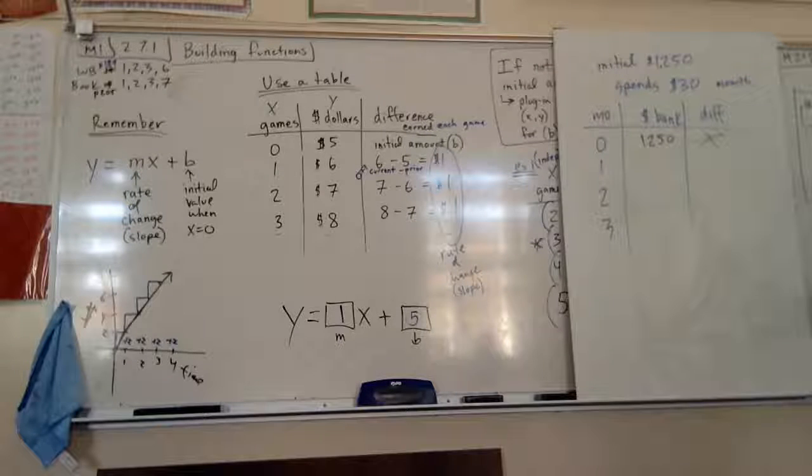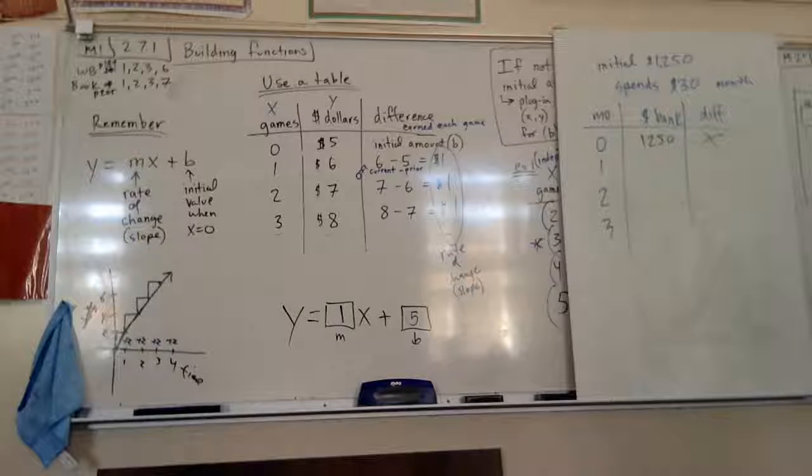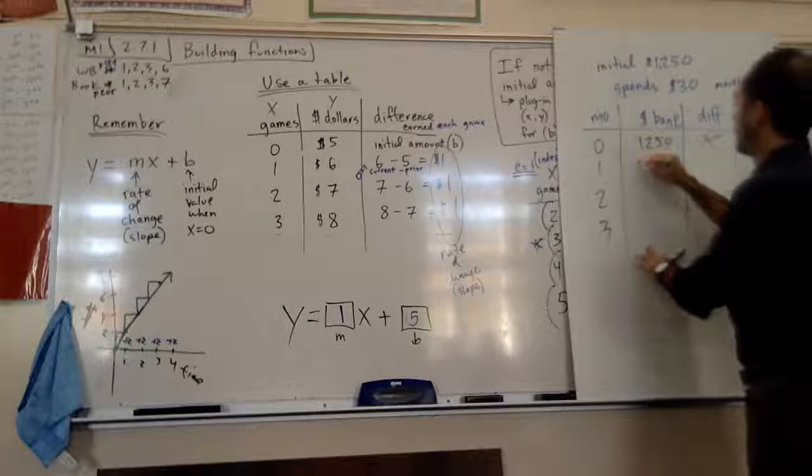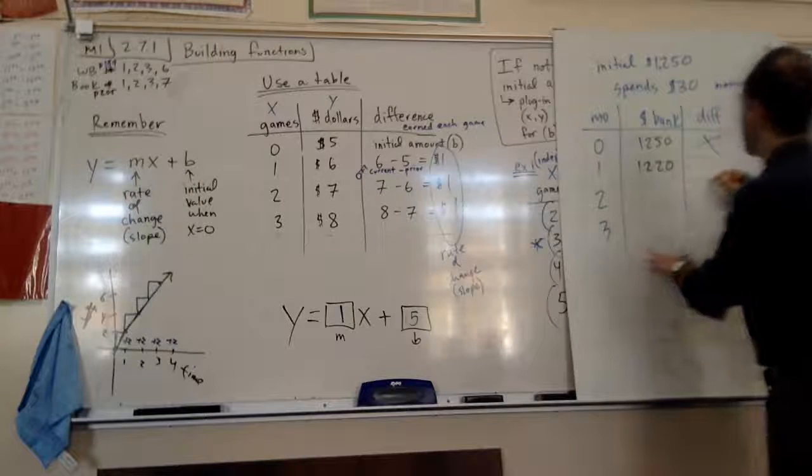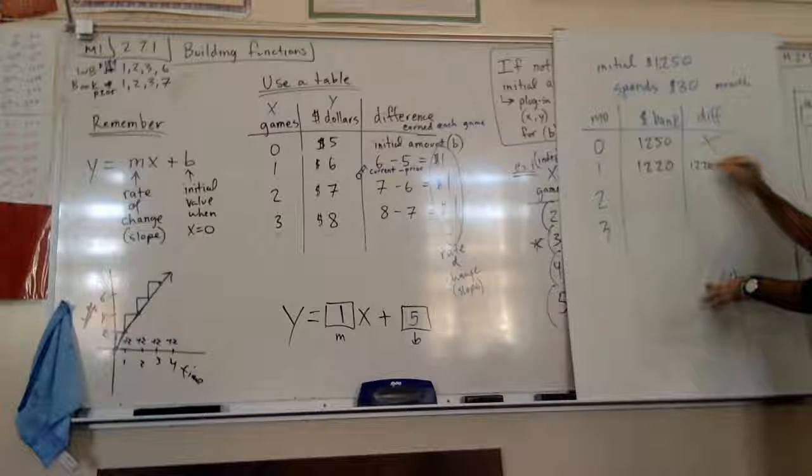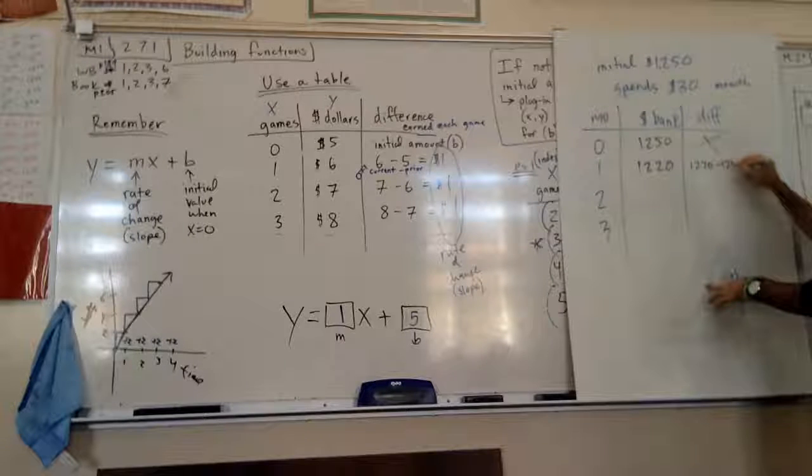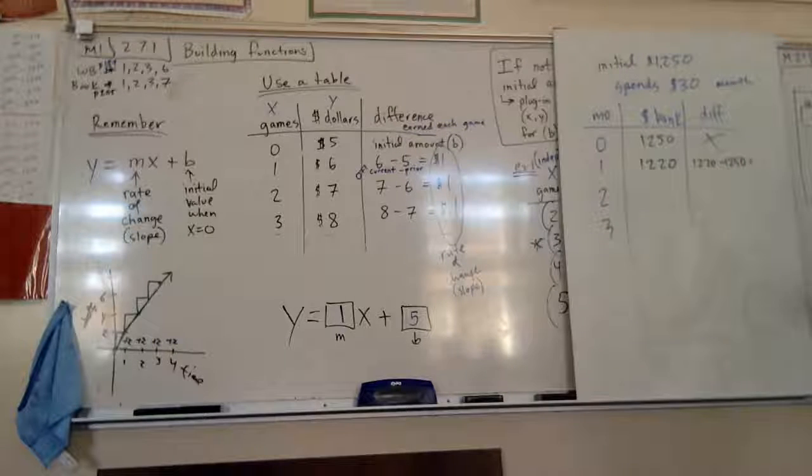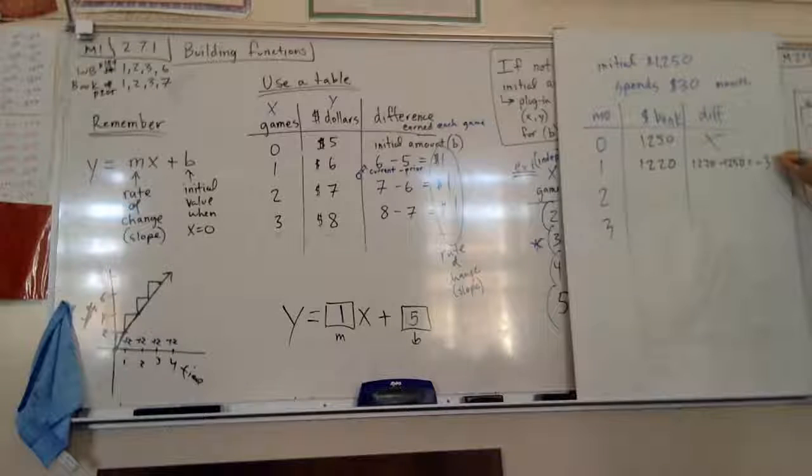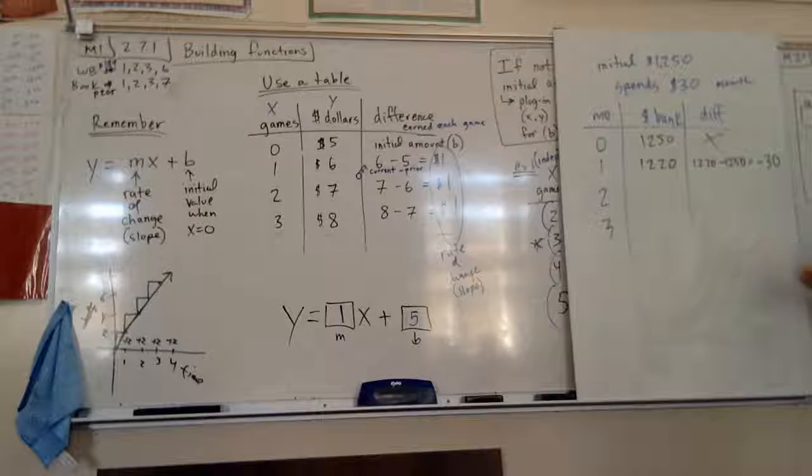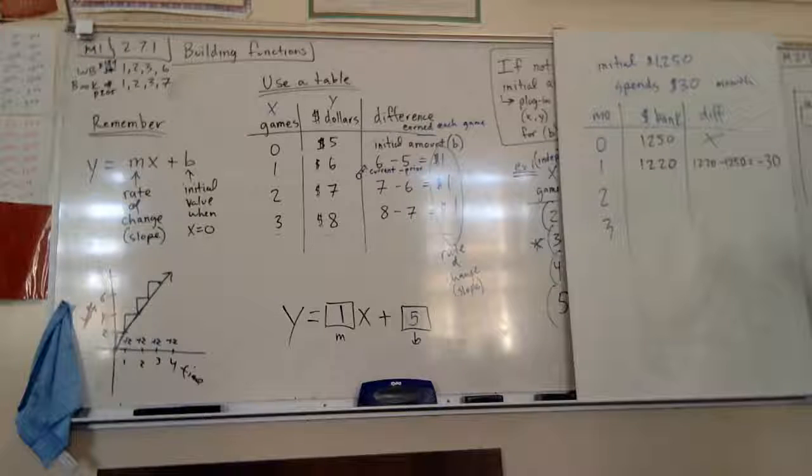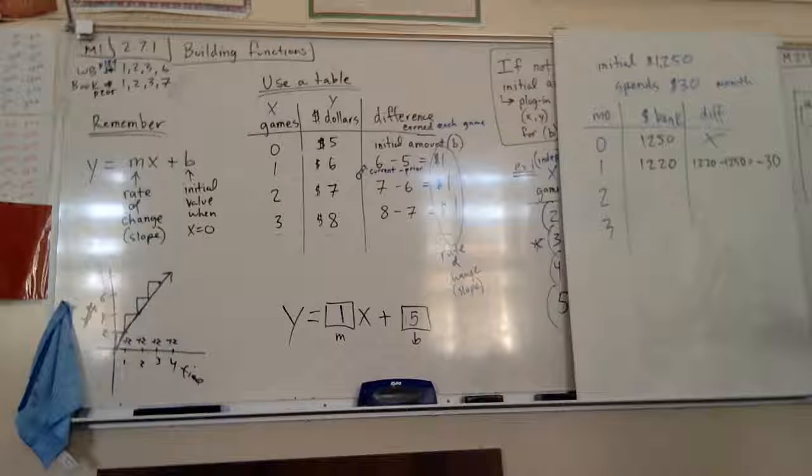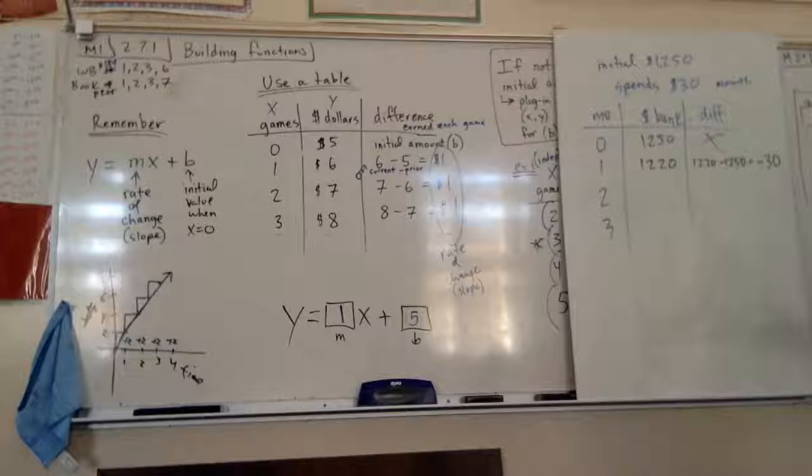The difference kind of doesn't matter because there's nothing before zero months. That's just how much she has. Now, she spends $30 every month. So, after one month, what does she have? One thousand, two hundred and twenty. And we can do this. We can say, well, what's one thousand, two hundred twenty minus the one thousand two hundred fifty? What is that? Negative thirty. Now, does that make sense? If you spent thirty bucks and you had a total in your account, you spent thirty bucks, are you adding thirty dollars? You're subtracting thirty dollars.